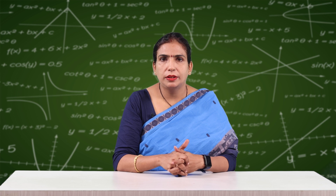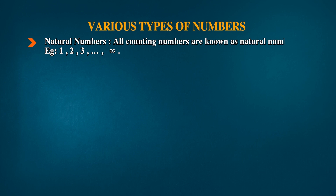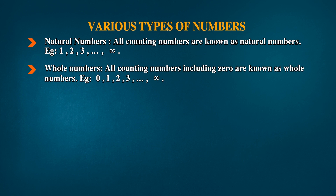Before starting with rational numbers, let us revise our journey of numbers. On the onset of our learning journey, we first came across numbers all around us — like 'we have one nose, two eyes.' These are natural numbers. All counting numbers are known as natural numbers, for example 1, 2, 3, 4, 5 up to infinity. We kept these in our journey bag. Then we found zero, so our bag now contains 0, 1, 2, 3... up to infinity — these are whole numbers.